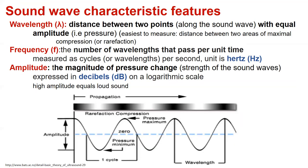If we want to characterize sound wave features, we have to talk about wavelength — the distance between two points with equal amplitude — and frequency, the number of wavelengths that pass per unit time, measured as cycles per second, with the unit being hertz. And about amplitude, the magnitude of the pressure change expressed in decibels on a logarithmic scale.